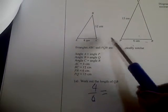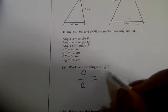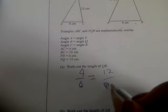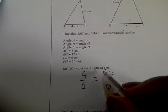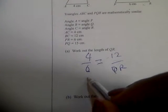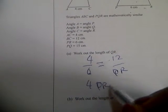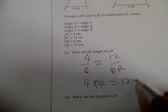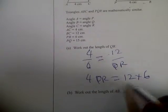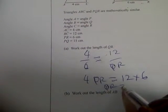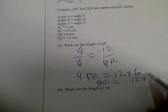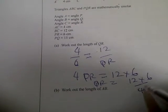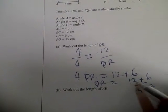4 over 6 equals 12 over QR. Cross-multiplying, you have 4QR equals 12 times 6. So QR equals 12 times 6 over 4.